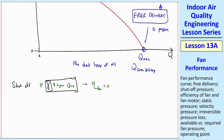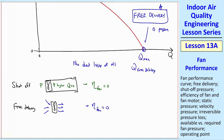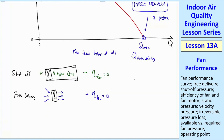The other extreme is free delivery — the fan is spinning but there's no duct at all, so the flow just comes in and blows with no pressure drop. Again, eta fan equals zero — you're doing nothing useful in terms of pushing flow through a duct. In between these two extremes, there will be some maximum efficiency somewhere in the middle.